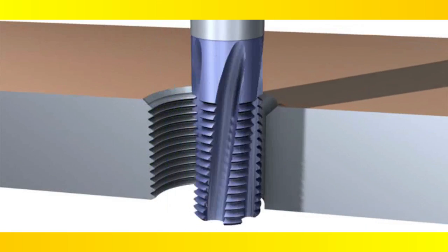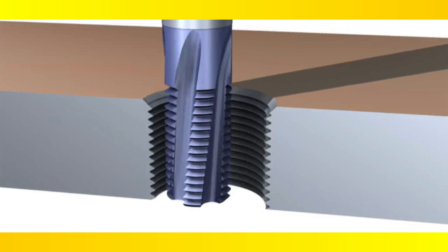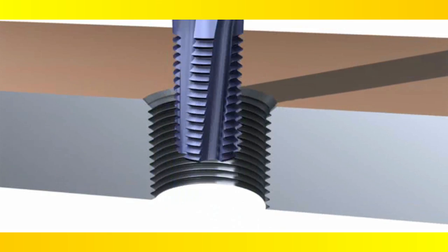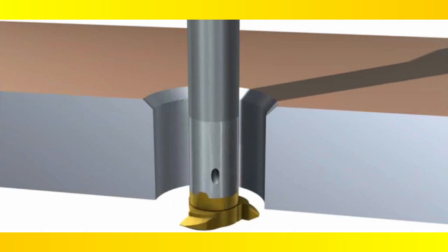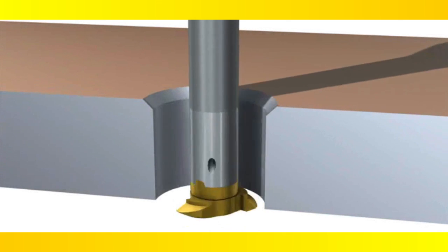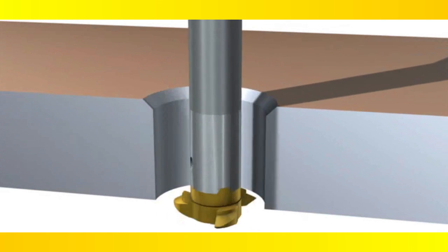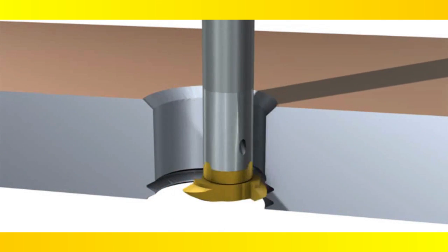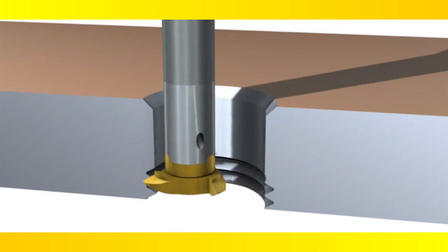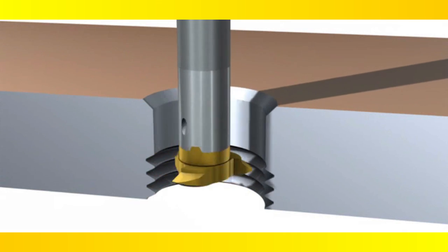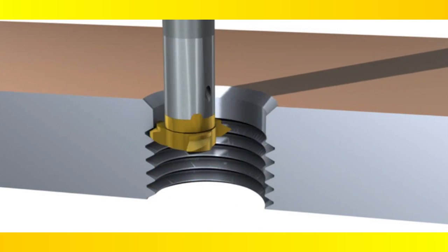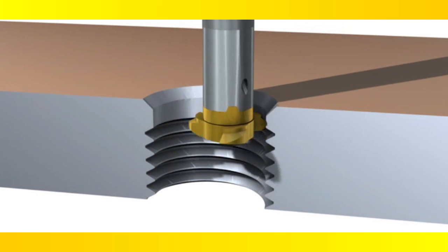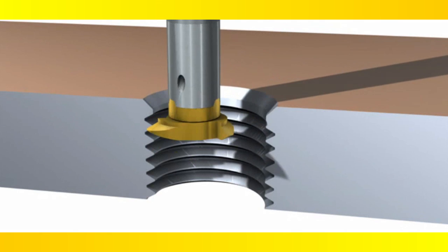Thread milling is an ideal option for the threading of both holes and bosses. Instead of using a turning tool or tapping tool to produce a thread, a milling tool is used to helical interpolate a thread to a specified depth and pitch. Depending on the application, this threading technique can yield better quality threads and higher productivity than its alternatives.